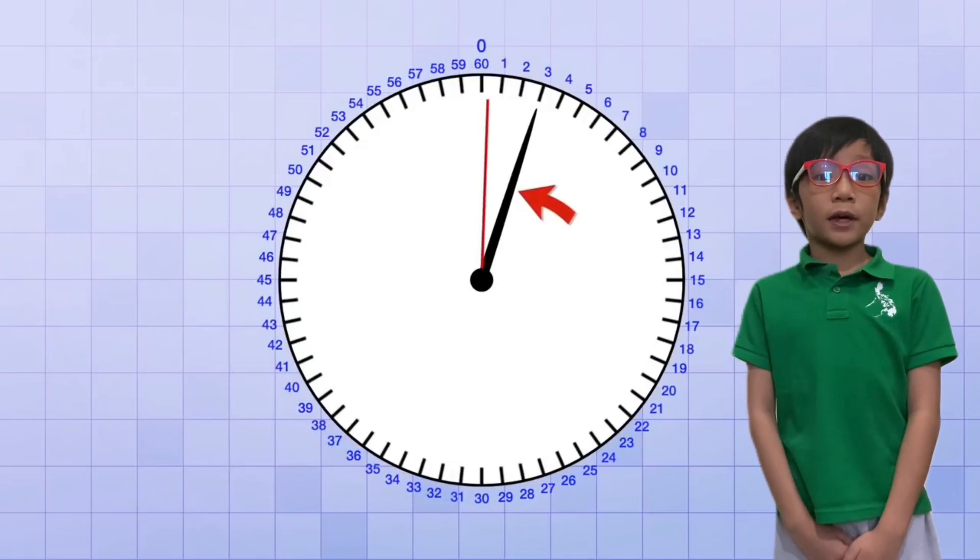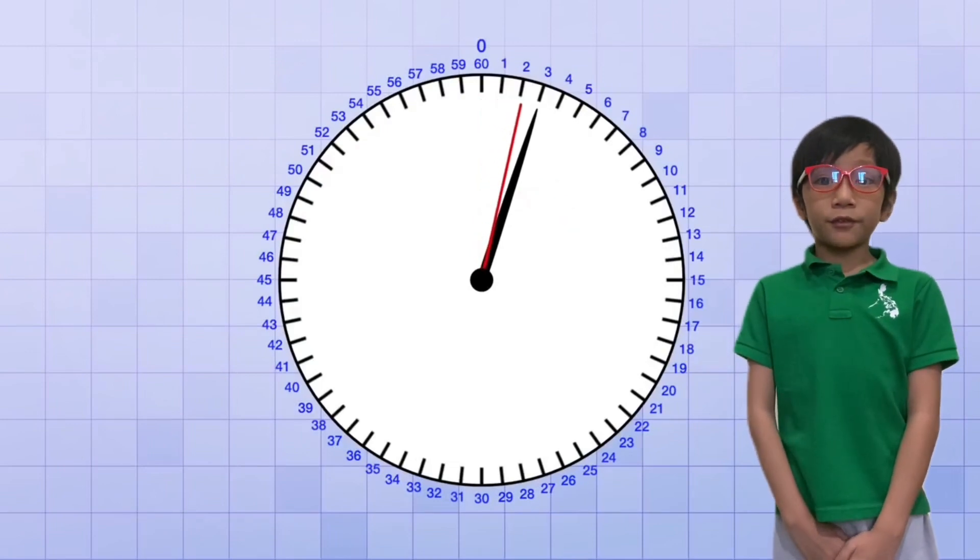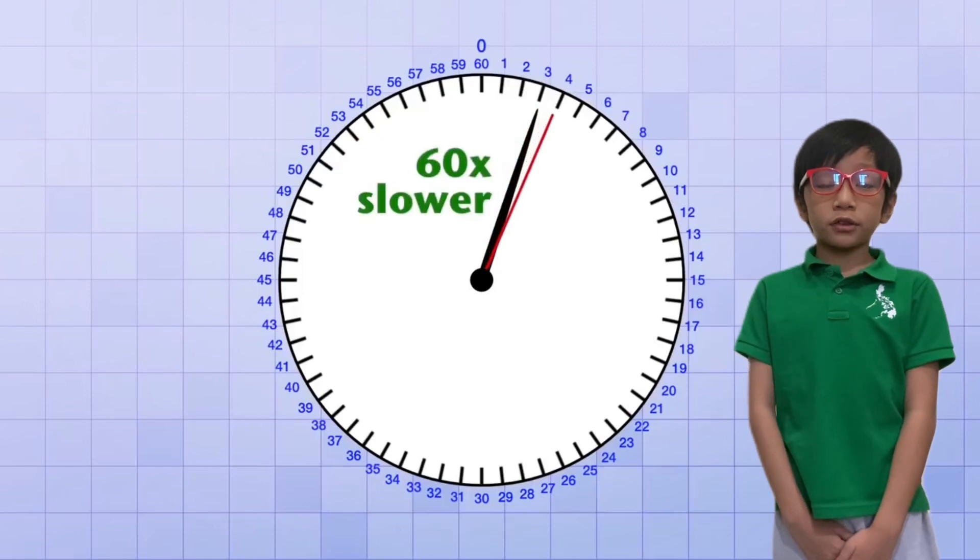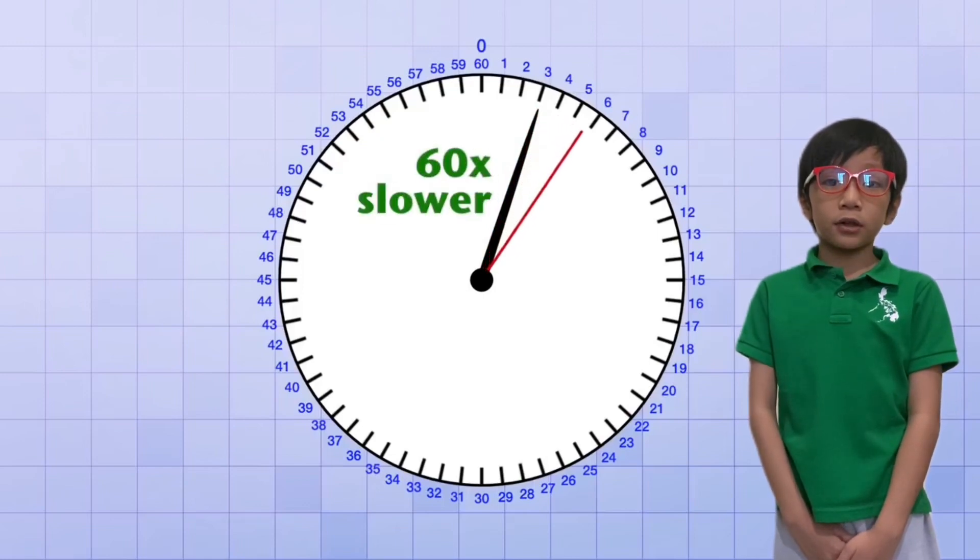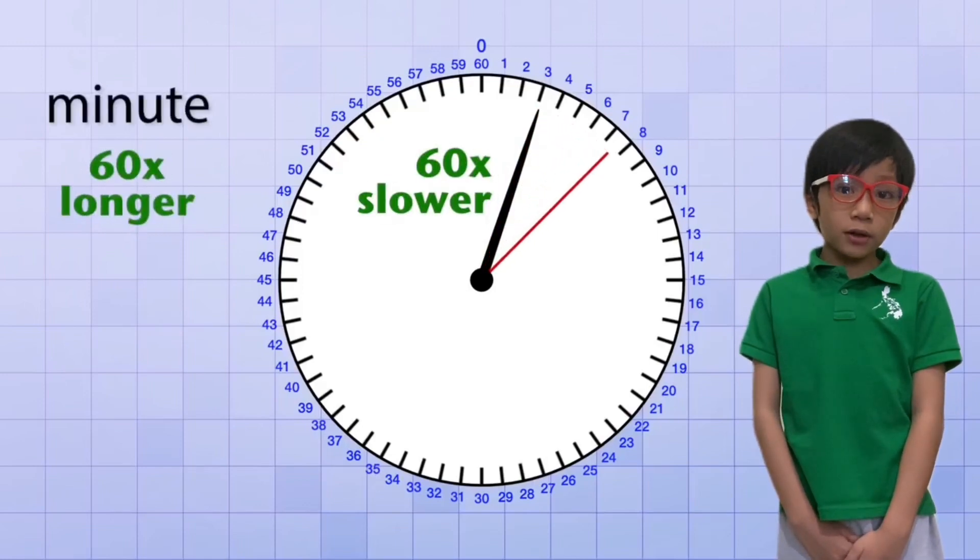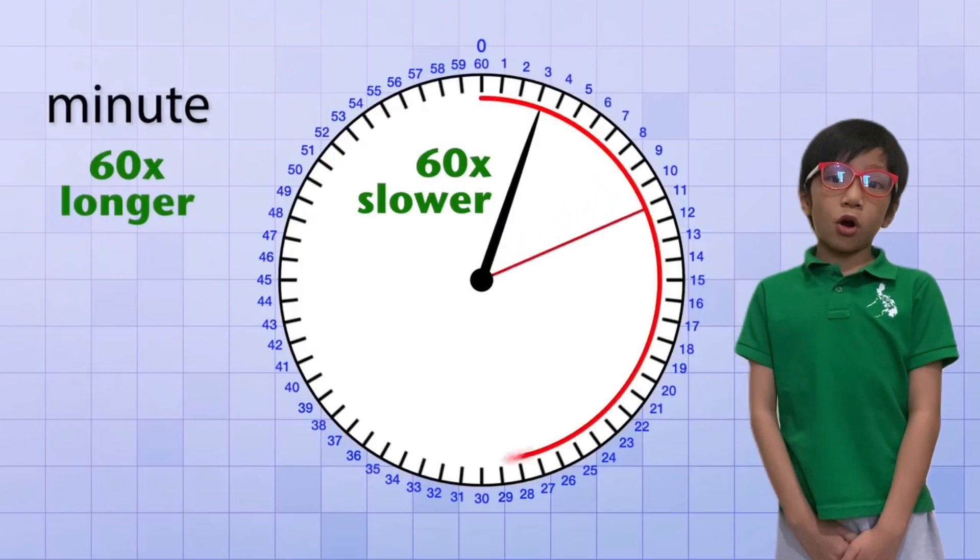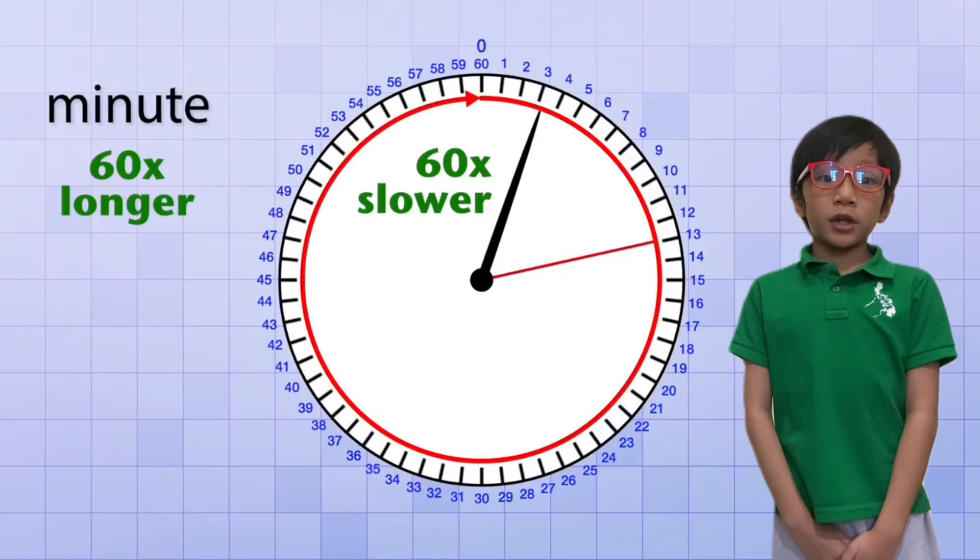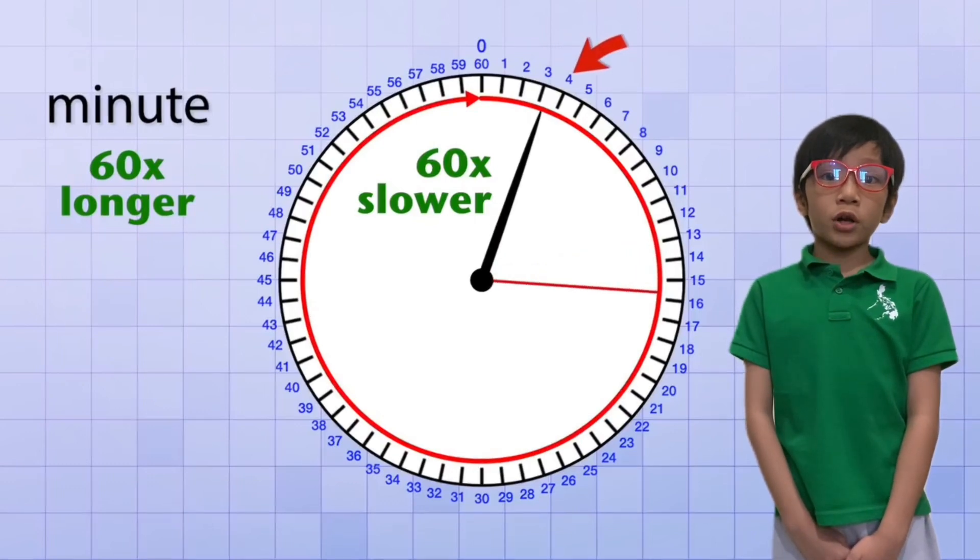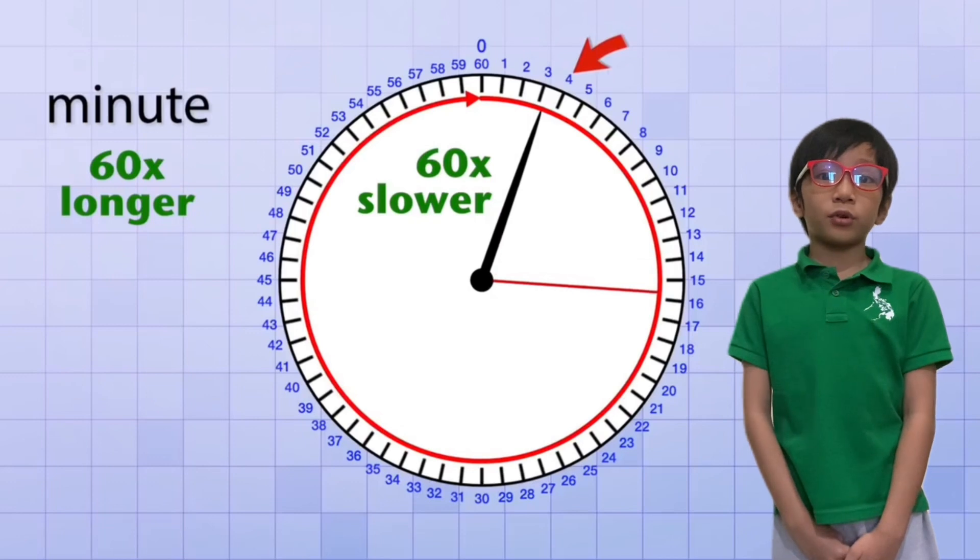The minute hand is the same as the second hand. The main difference is that it moves slower, 60 times slower to be exact. Since a minute is 60 times longer than a second, while the second hand moves all around the clock, the minute hand only moves one line to the next, or once the second hand makes a full rotation.